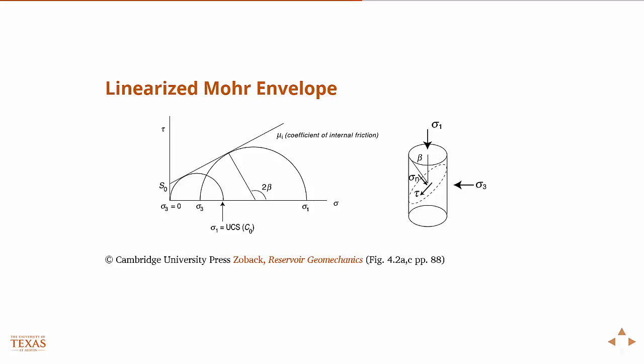The simplest one we could come up with is if we linearized it, we just took the best fit straight line through the tangent points of those curves. Then we have the linearized Mohr envelope. We introduce this thing called cohesion. S0 is the y-intercept of this line. The slope of the line, mu, is called the coefficient of internal friction.